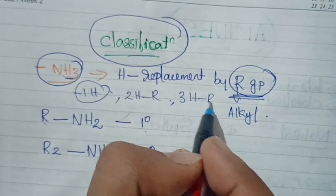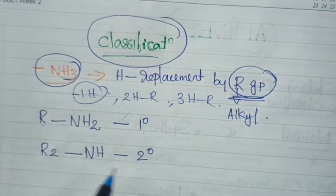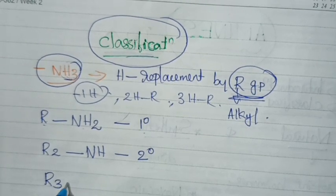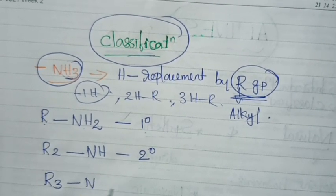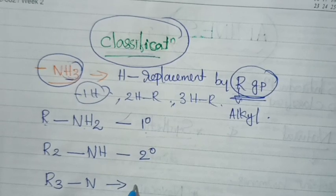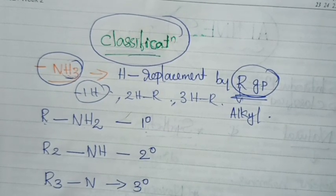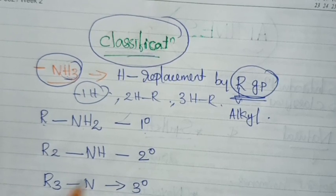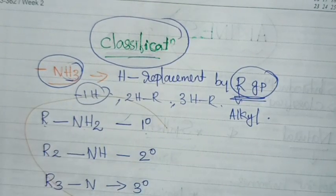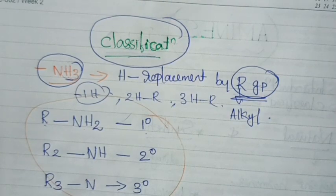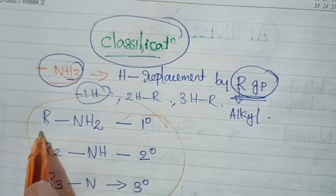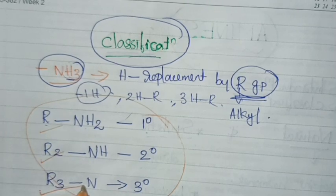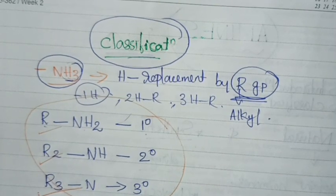If three hydrogens of ammonia are replaced with three R groups, we write R3N. Three hydrogens are replaced with three R groups. That is the tertiary amine.